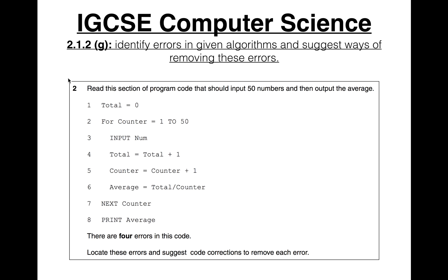This question comes from the 2015 winter paper. It says: 'Read the section of program code that should input 50 numbers and then output the average. There are four errors in the code — locate these errors and suggest code corrections to remove each error.' It's important to read this part carefully to understand what the code should do.